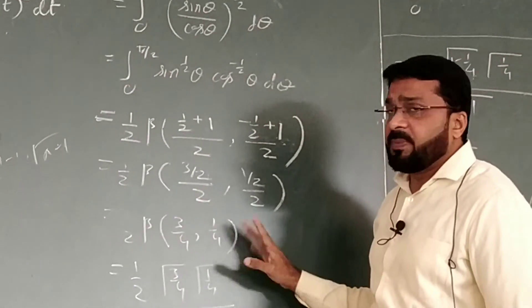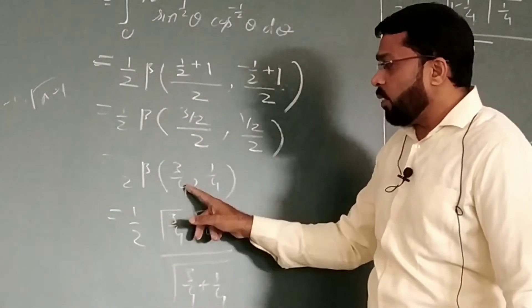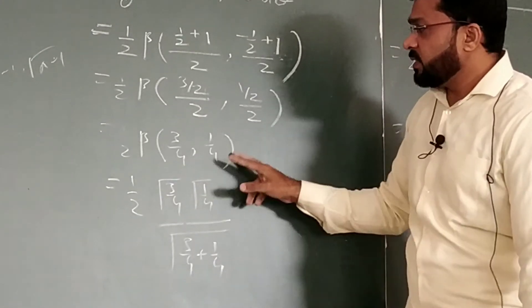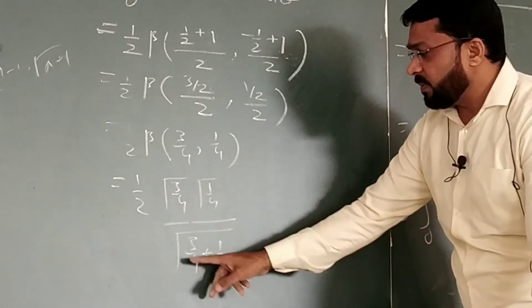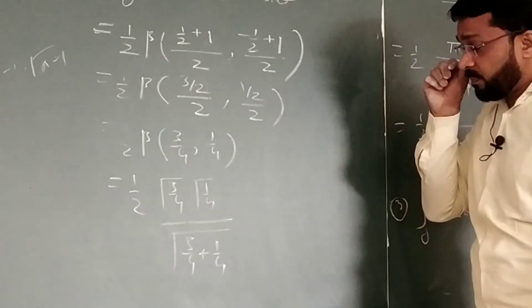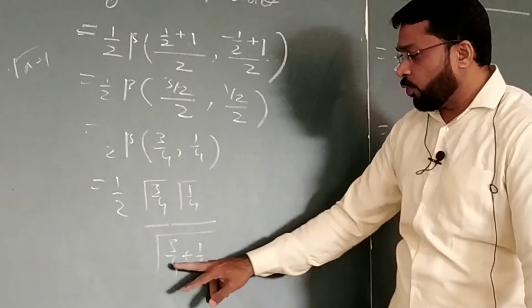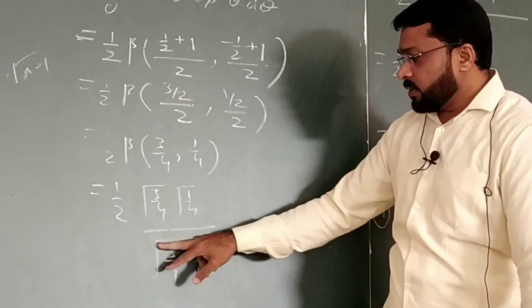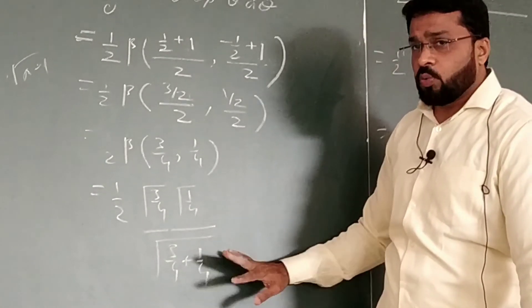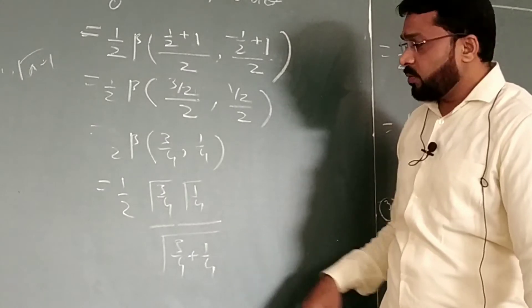Apply the relation of beta gamma function, this will be gamma 3/4, gamma 1/4, then addition of these two in the denominator, gamma 3/4 plus 1/4. Apply this one, evaluate this one, 4 as LCM, 3 plus 1 is 4, 4 by 4 is 1, gamma 1 is 1 only. Now, what is left? Gamma of 3/4, gamma of 1/4, this is left with us.